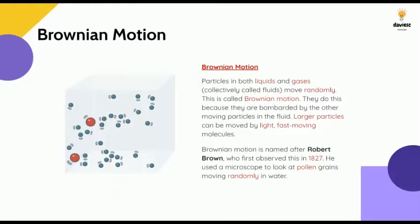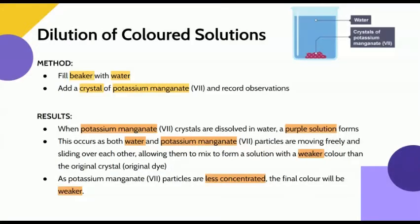This concept was developed by Robert Brown, who discovered it in 1827 by looking at pollen grains under a microscope and observing how they move randomly in random directions.